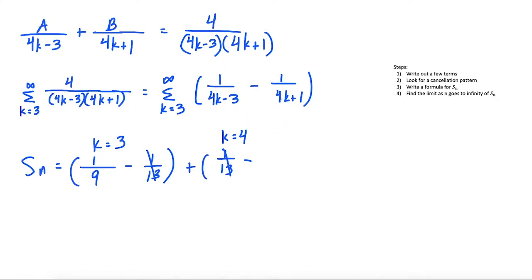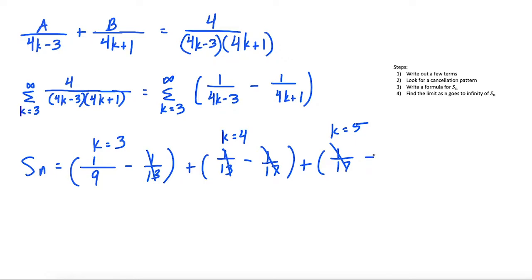At k equals 4, we also get minus 1 over (4·4 plus 1) = 1/17. At k equals 5, the first term is 1 over (4·5 minus 3) = 1/17, which cancels, and the remaining term is 1 over (4·5 plus 1) = 1/21. So the pattern is that at the nth term, the first term of the new sum cancels, and we're left with minus 1 over (4n plus 1) as the surviving last term.